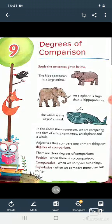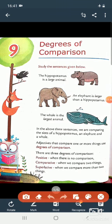When there is no comparison, we use positive degree. Jab koji comparison nahin kiya jata, toho hum positive degree ka use karthay hain. You can see the example. The hippopotamus is a large animal. Yahaan per hum kisi ko, hippopotamus ko kisi se bhi compare nahin kar rhea hain. So, we have used positive degree, large.